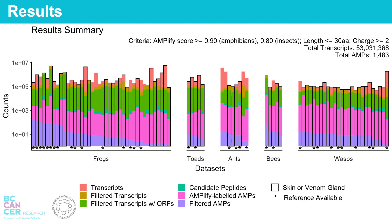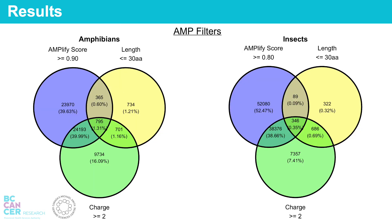Here are the results from Rampage. Along the y-axis you see the counts, and along the x-axis the 84 datasets used, arranged by common name classification. Here you can see the progression of data through Rampage, from 53 million assembled transcripts to over a thousand candidate AMPs. The candidate AMPs have met our AMP filters. The three AMP filters are Amplify score, length, and charge. You can see the data attrition of each filter — length is the most restrictive filter. So if more AMPs were needed from the same 84 datasets, the length cutoff could be increased to 50 amino acids instead of the current 30.